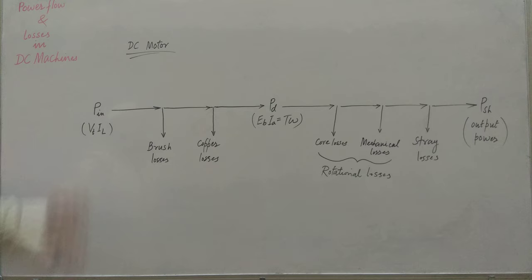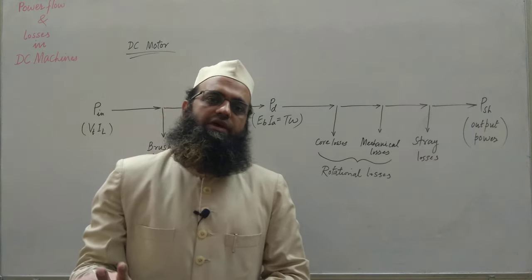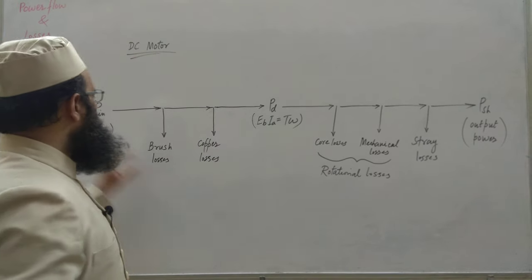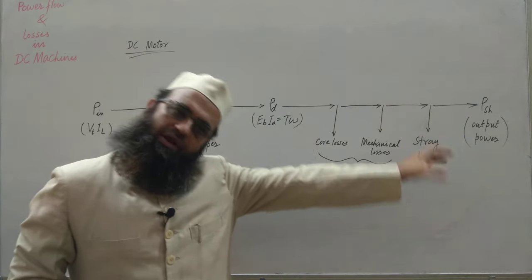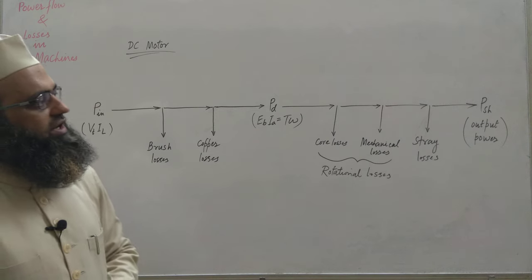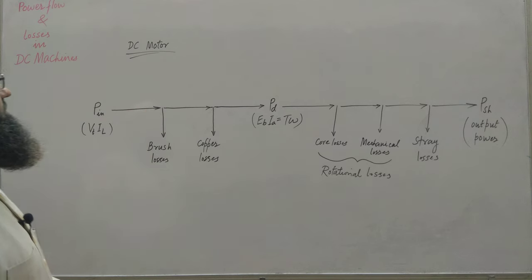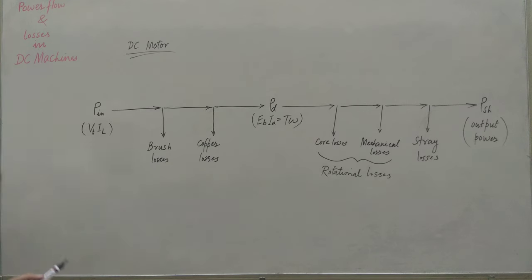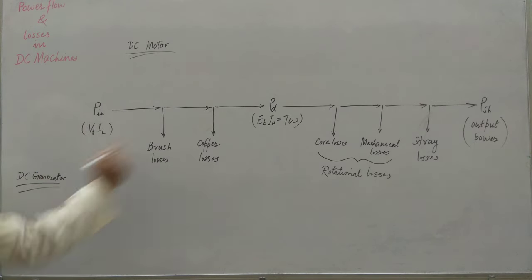In case of a generator, the power flow reverses. For a motor, we have electrical power input and mechanical power output. For a generator, we have mechanical power input and electrical power output, with losses in between. So for DC generator, just reverse the directions. Input power is the shaft power (mechanical input).